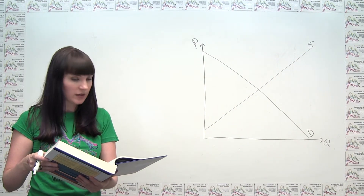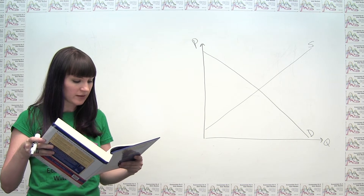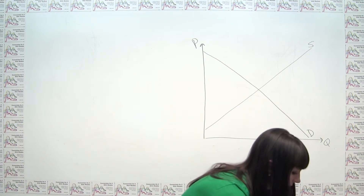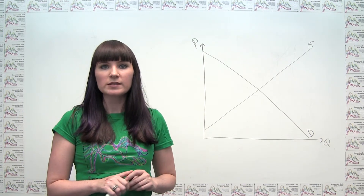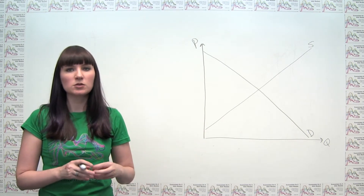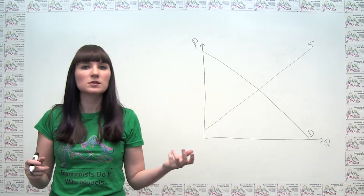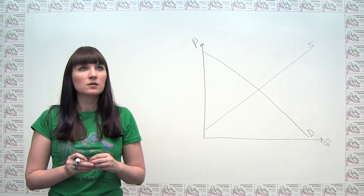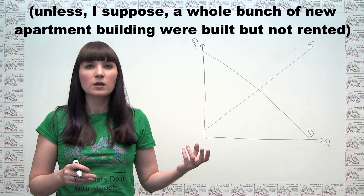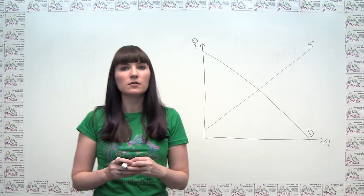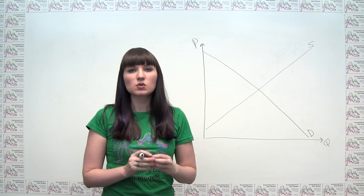Part B asks us to look at apartment rentals. We're told that apartment vacancy rates increase while average monthly rent on apartments declines. We need to think about whether an increase in vacancy rates corresponds to an increase or decrease in the quantity of apartments being rented. An increase in vacancies is more likely to correspond to a decrease in equilibrium quantity — technically, we're seeing a surplus of apartments. But let's just work within the framework of what we're given here.